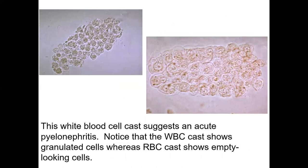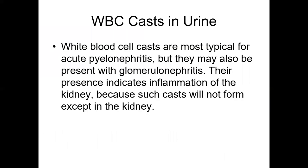This is a white blood cell cast — you see a group of cells within a kind of membrane in the microscopic view of the urine. That's a white blood cell cast, which can be seen in pyelonephritis or glomerulonephritis secondary to infections, because bacteria can bring on the neutrophils — PMNs, like we discussed in the case of glomerulonephritis.